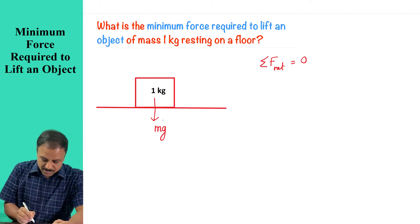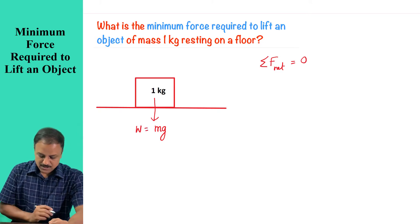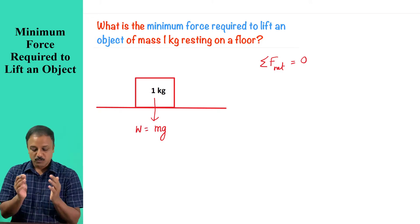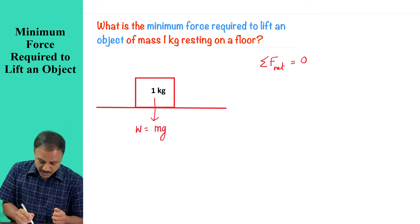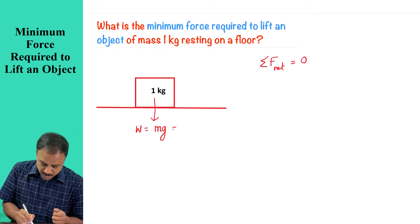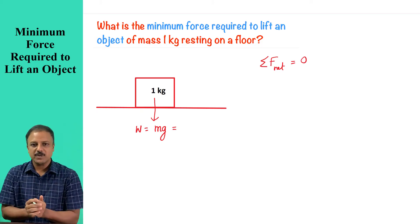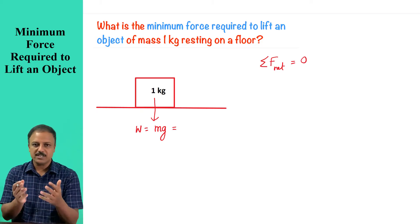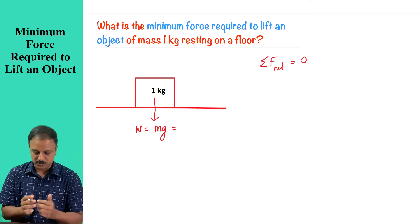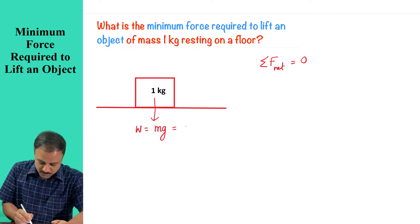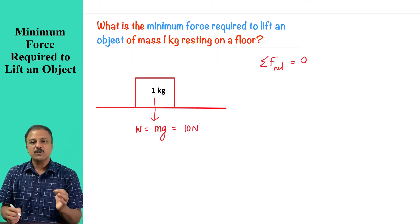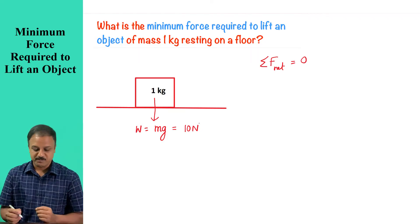This is the weight of the object, which is mg. This is equal to m = 1 kilogram, and you can take the value of g to be approximately 10 meters per second squared. Therefore, this will be 10 Newton. A 1 kilogram object is going to exert a weight of 10 Newton.